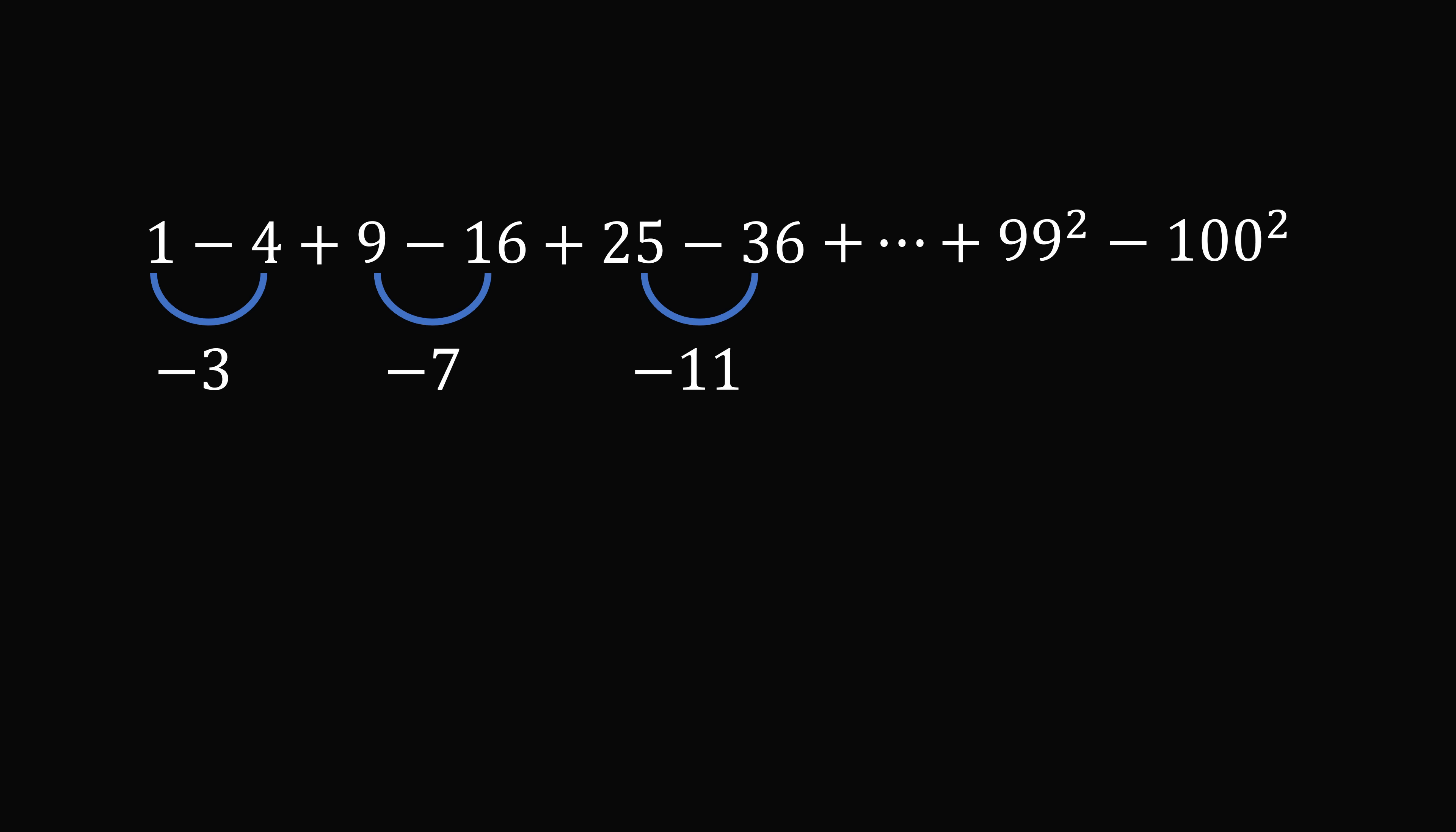Now let's look at the difference between these terms. The difference between negative 3 and negative 7 is 4, and the difference between negative 7 and negative 11 is also 4. So we can see we have a pattern. The sum of every pair of terms will be an arithmetic series with a common difference of 4. To evaluate the sum of this arithmetic series, it will be useful to calculate the last term.